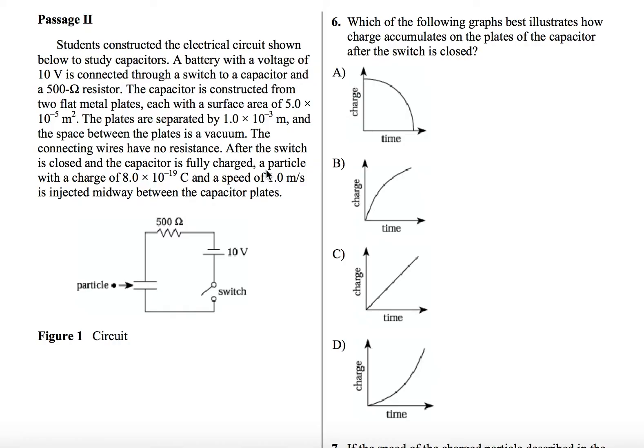So which of the following graphs best illustrates how charge accumulates on the plates of the capacitor after the switch is closed? So the first thing you want to do when you get graphical questions is to look at the axes. So on the y-axis, we have charge, and on the x-axis, we have time. As we know, the capacitor is being charged up. So we expect that over a period of time, the charge should increase on the capacitor. So any of the graphs that show charge decreasing or not increasing are out of the question. So A is going to be out.